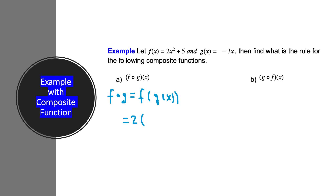Because instead of x, we're going to plug in function g of x. Let's leave some space here. f of x is 2x squared, so instead of x we leave a space and write the square, and here is a plus 5. And instead of the x here, we plug in function g of x, which happens to be minus 3x. So here is minus 3x.